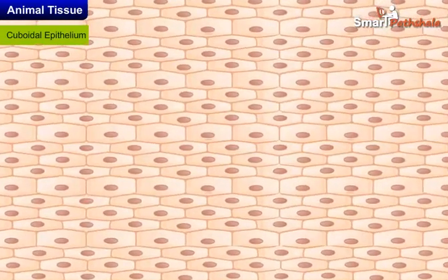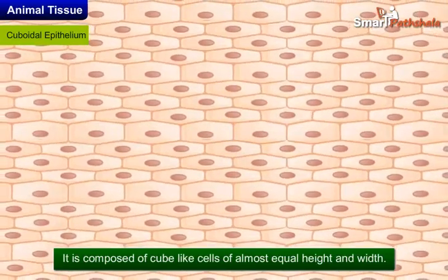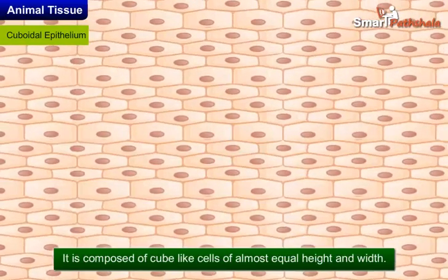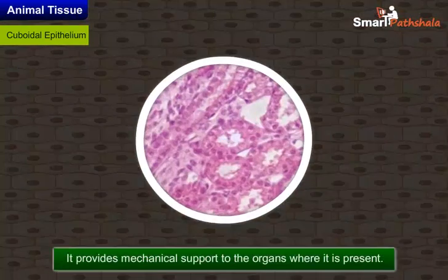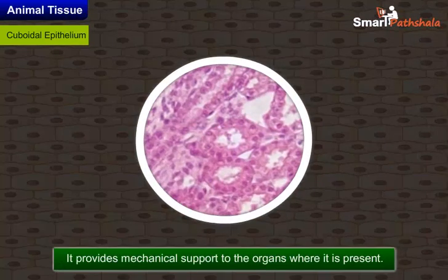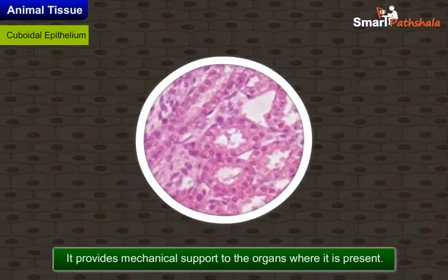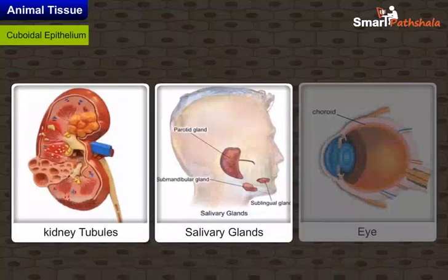Cuboidal epithelium is composed of cube-like cells of almost equal height and width. It provides mechanical support to the organs where it is present. For example, it is present in kidney tubules, salivary glands, choroid layer of eye, etc.